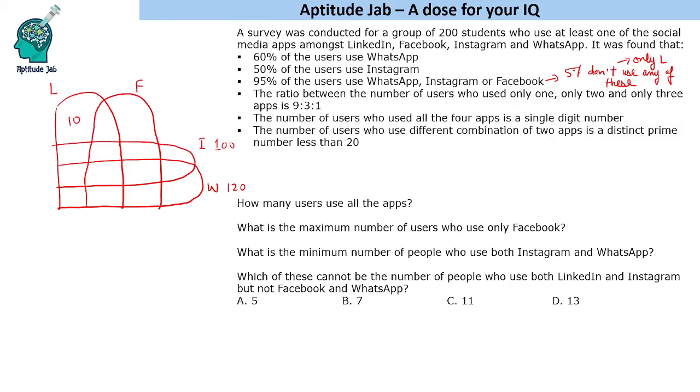That indirectly means that 5% use only LinkedIn, so only LinkedIn will be 10. It is given that all of them use at least one of the social media apps. So that means all these 5% will be the ones who use only LinkedIn.